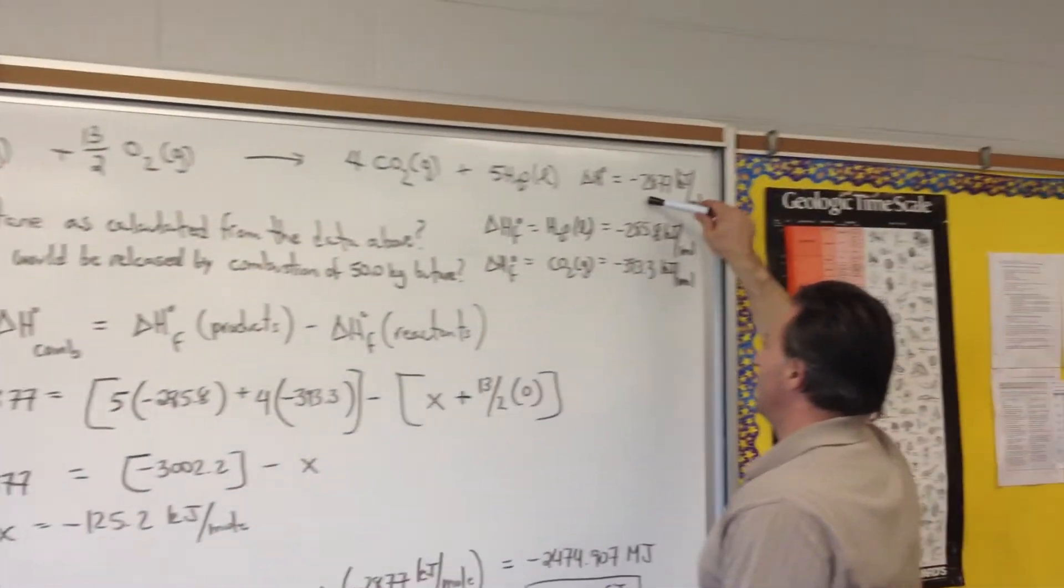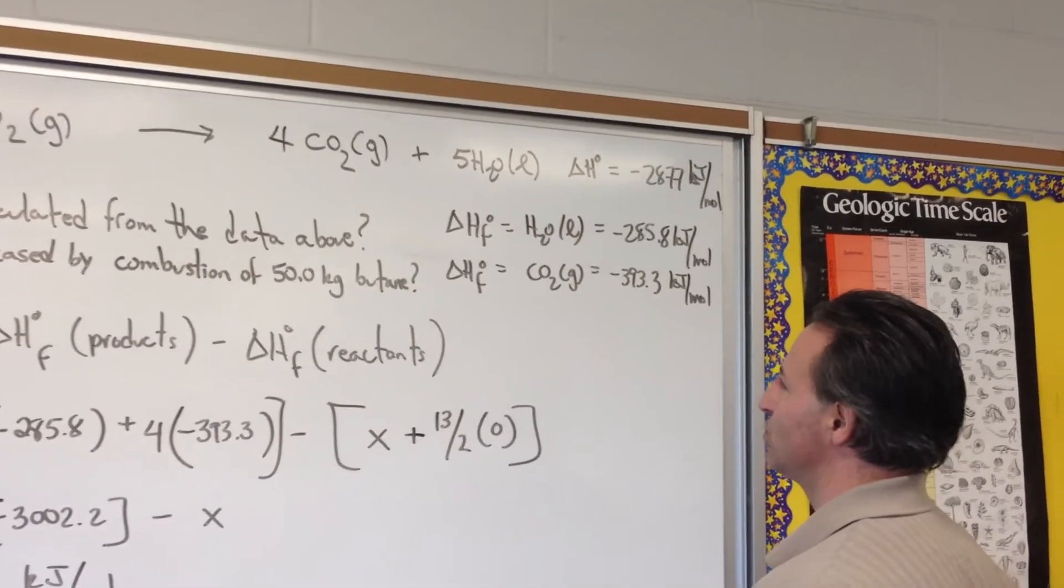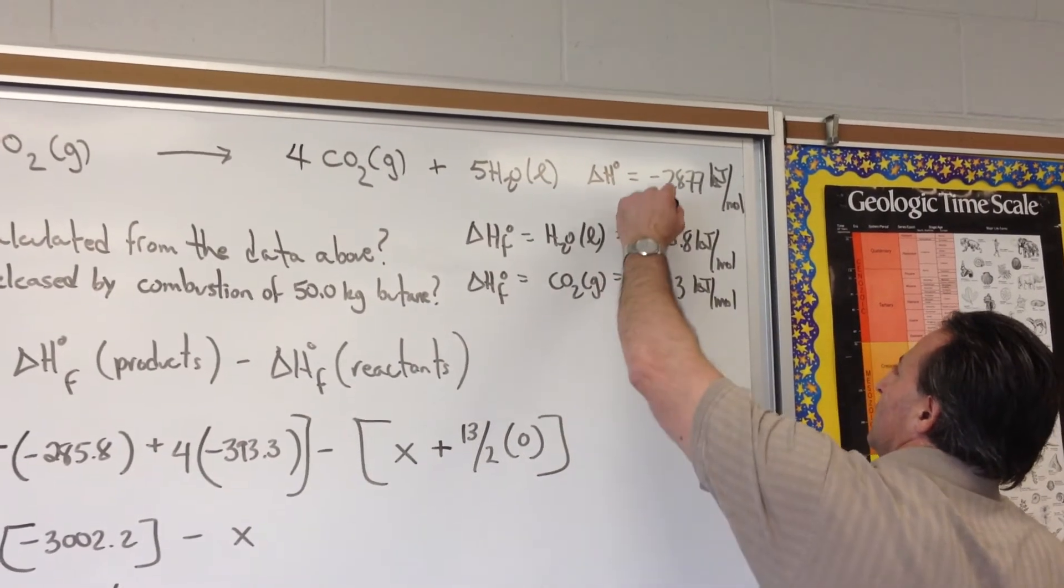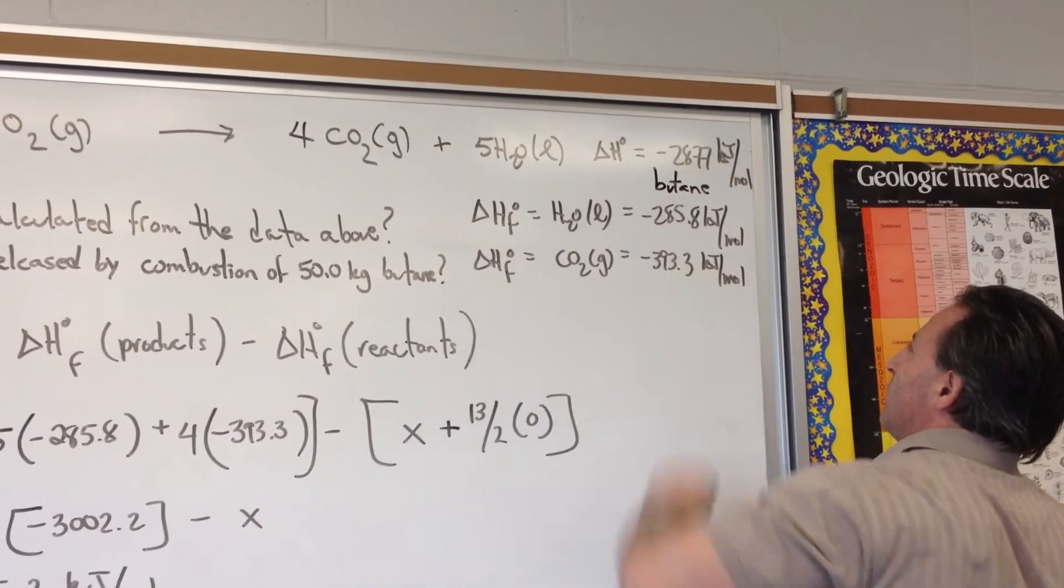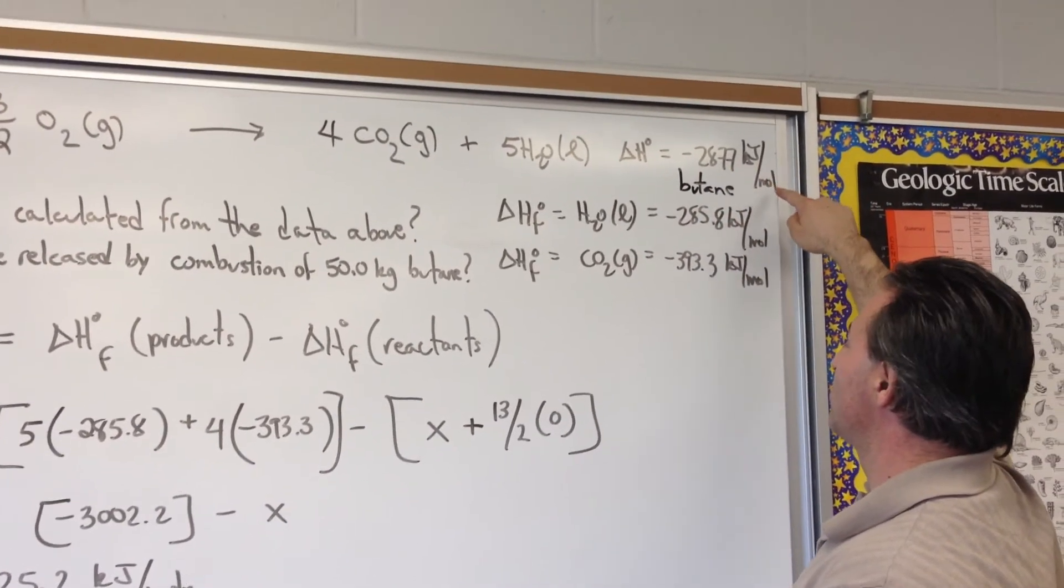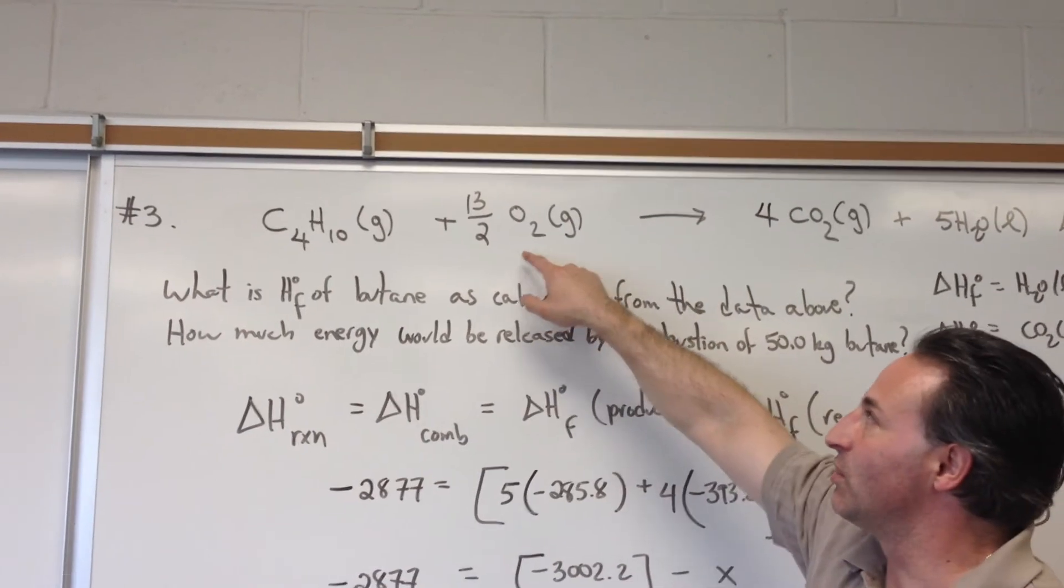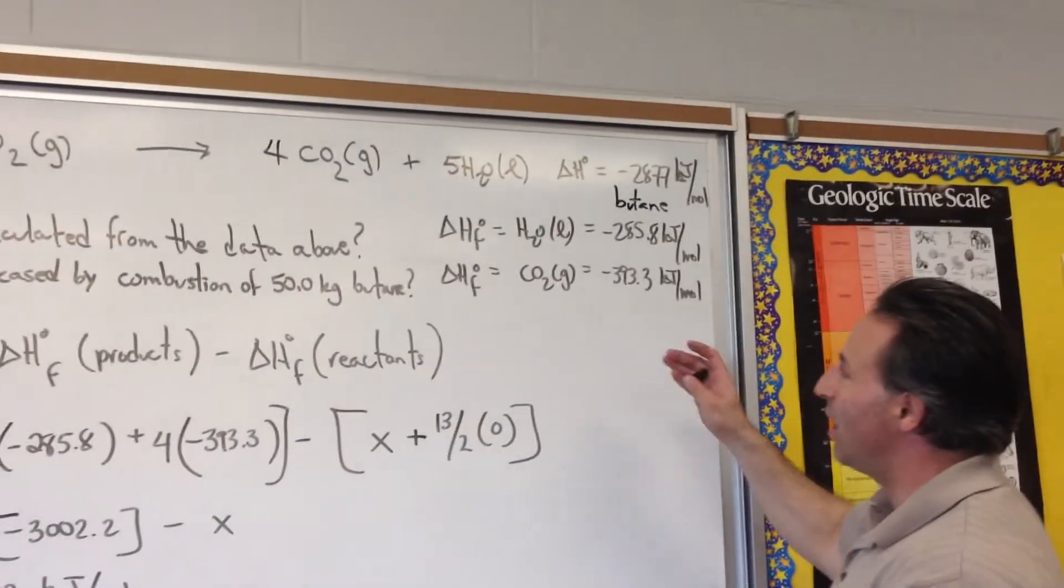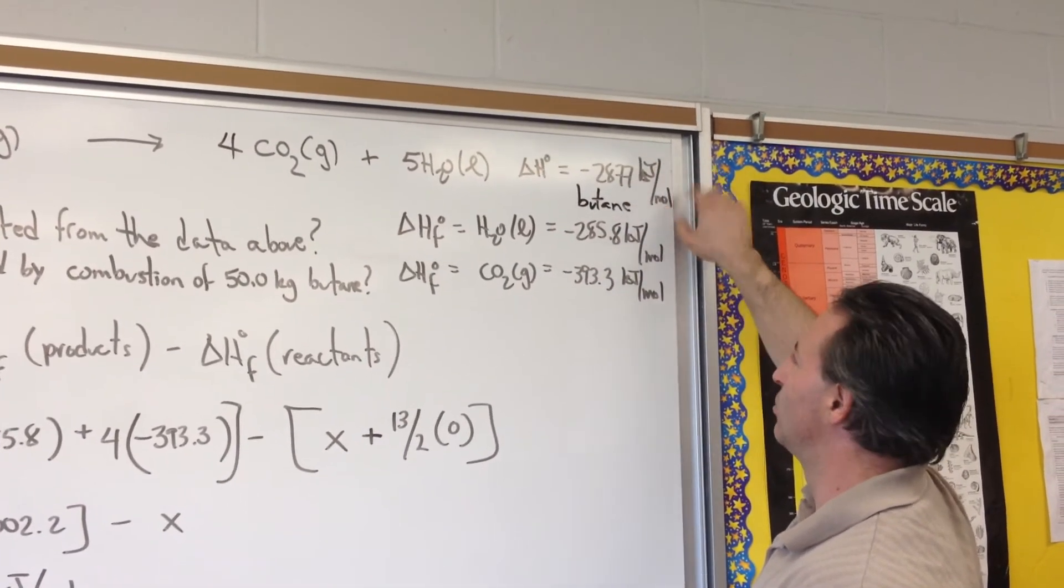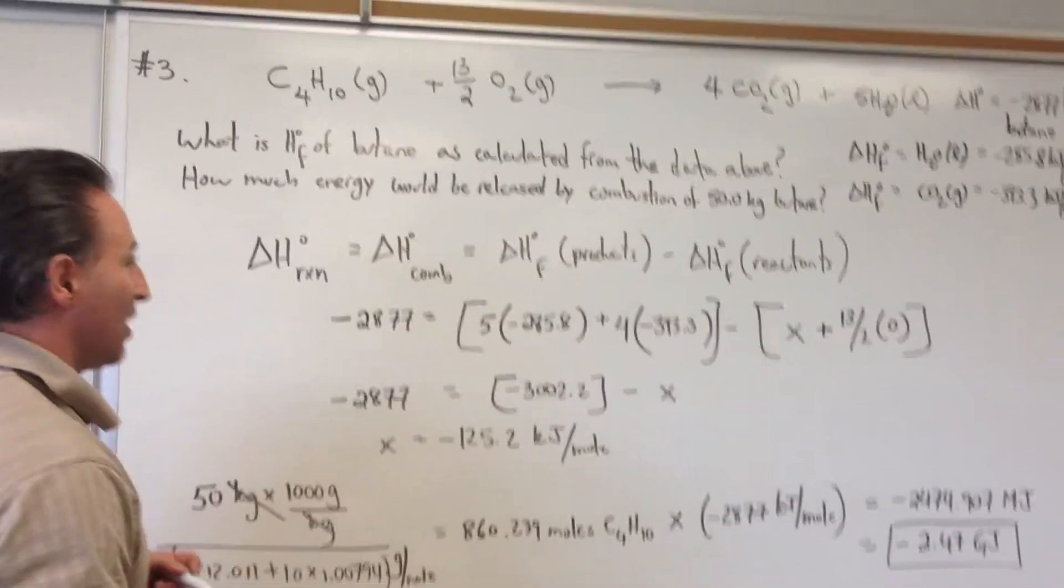We now have a balanced equation. We're told that the heat of combustion of butane, which is the delta H of reaction in this case, is negative 2877 kilojoules per mole of butane burned. You have to be careful when you write kilojoules per mole. Negative 2877 kilojoules per mole of butane burned. If you say just negative 2887 kilojoules per mole, which one are you talking about? You have to be specific. If not, then you have to just say negative 2877 kilojoules and don't write per mole unless you specify the actual chemical that you're talking about.